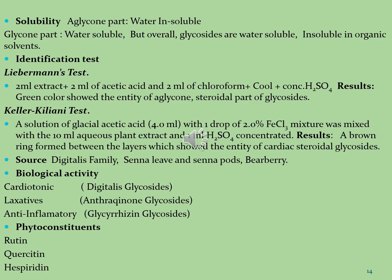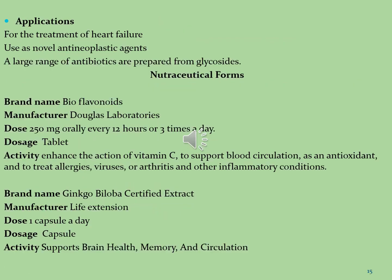Glycosides are isolated from the Digitalis family, Senna leaves and senna pods, and deer berry. Biological activities include cardiotonic activity due to digitalis glycosides, laxative activity due to anthraquinone glycosides, and anti-inflammatory activity due to glycyrrhizin glycosides. Other phytoconstituents present include rutin, quercetin and hesperidin. Glycosides are also used for treatment of heart failure and as novel anti-neoplastic agents, with a large range of antibiotics prepared from glycosides.